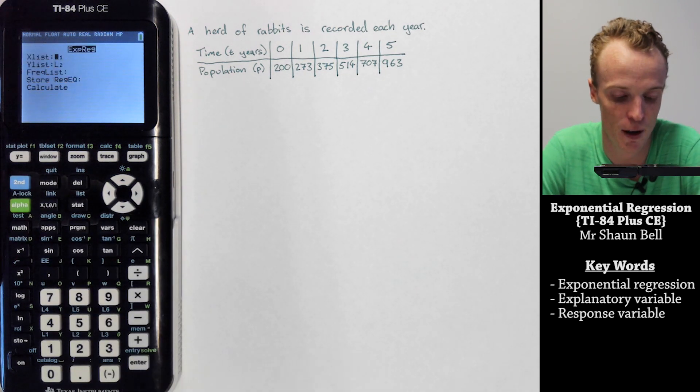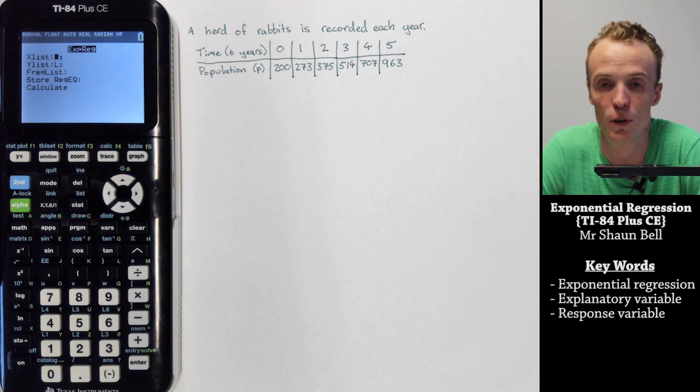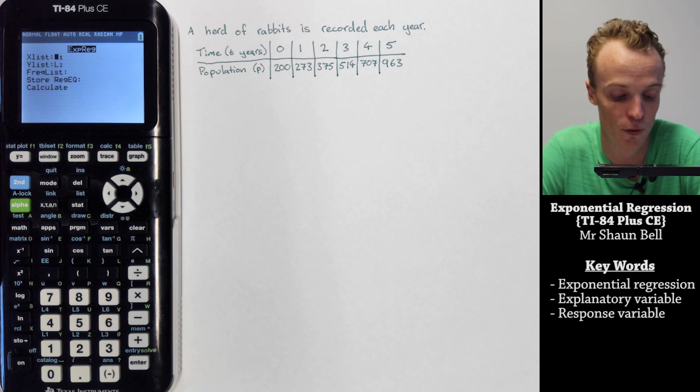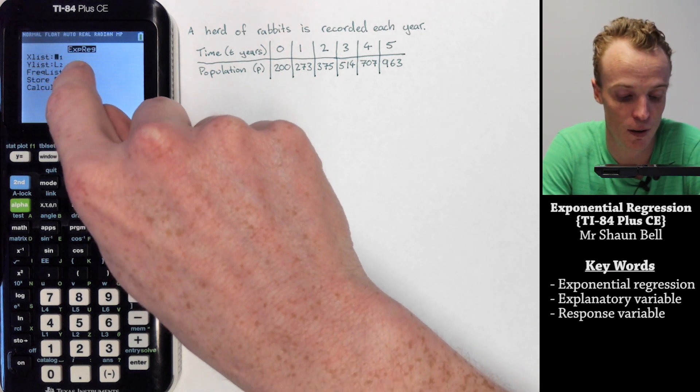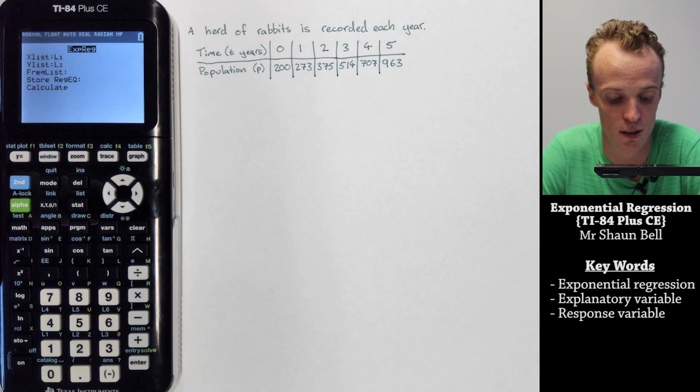If you press enter on that option, it'll ask you which one's going to be your X and which is going to be your Y list. Now my X list I put into list 1 and my Y list I put into list 2 already, so I don't need to change these.